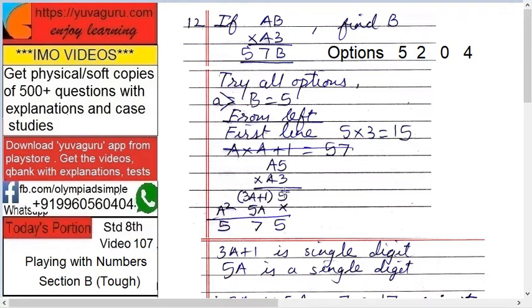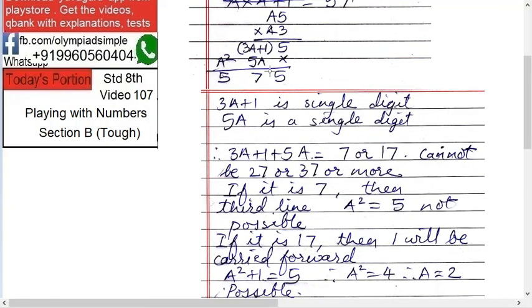It can't be a double digit because if it would have been a double digit, then the carry forward over here can't be more than more than any number which will make it more than 99, because 99 means only then it will be a three digit number, right? So that's why 3A plus 1 is a single digit and 5A is a single digit.